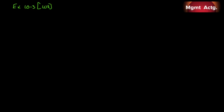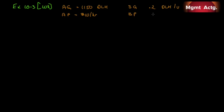Before looking at the requirements, let's identify our key variables. Our standard quantity is 0.2 direct labor hours per unit, and our actual quantity is 1,150 direct labor hours. Our actual price is ten dollars per hour, and our standard price should have been nine dollars and fifty cents per hour. Our output was six thousand units. With these five pieces of information, we can solve any problem asked of us.